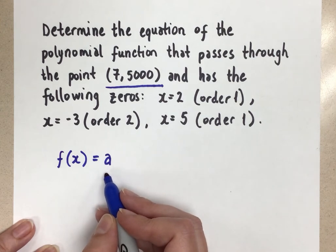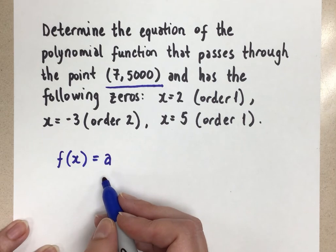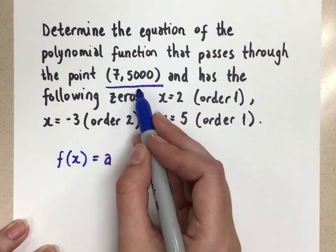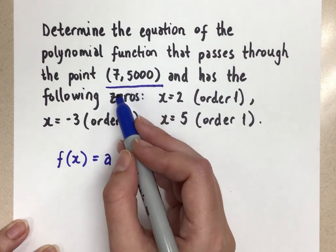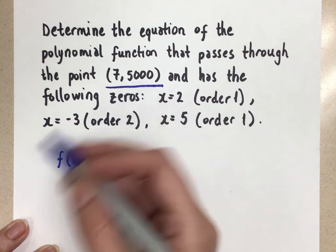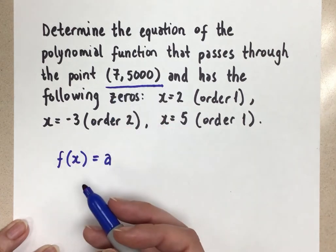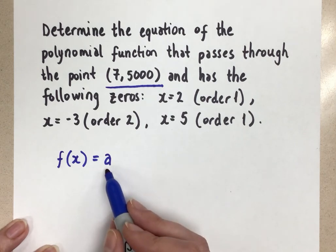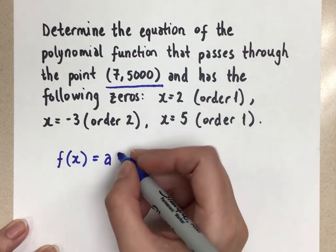You should not assume that the a value is positive 1. That is not an assumption that we should make. We need to figure out what that a value is based on the extra point that's given. It's often an extra point, or it's a y-intercept, or something like that. Like they'll give you information that you can use to sub in for x and y as an extra point to then solve for this a. Okay, so let's keep going.